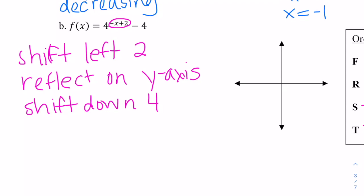So let me draw the graph. Originally, following the y-intercept point at (0, 1): it goes 2 to the left, so now it's at (negative 2, 1). Then it's reflected on the y-axis, so it ends up over at (2, 1). And then it's shifted down 4, so we know that y equals negative 5 is the horizontal asymptote. Since it was flipped, it was originally increasing — now it's going to be decreasing.